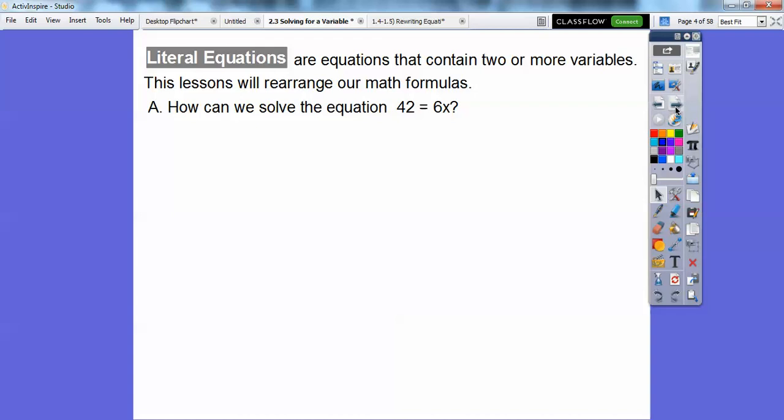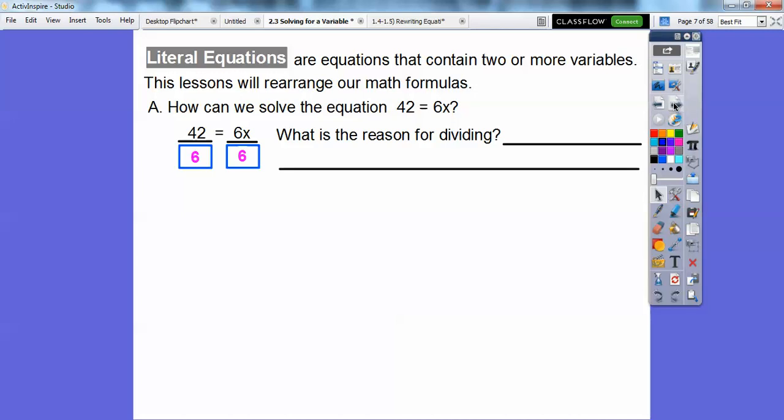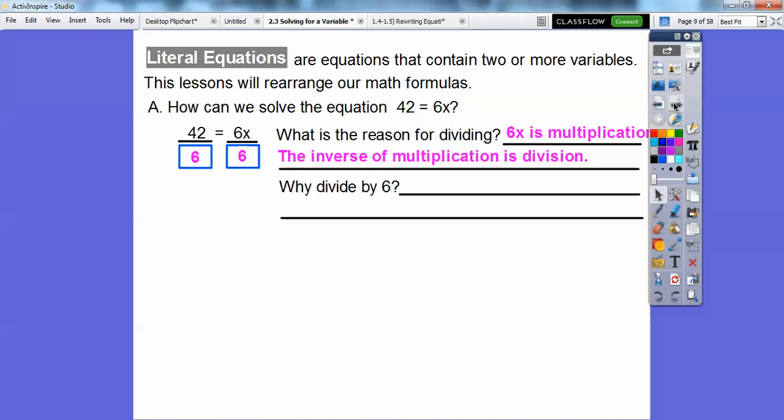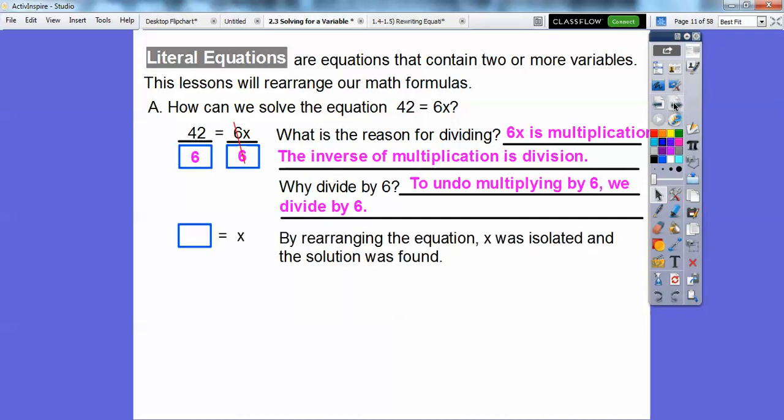So let's go back to a pre-algebra lesson, 42 equals 6x. How can we solve that equation? Well, we're going to divide both sides by 6. We've done this before. 6x means multiplication, so the inverse of multiplication is division. To undo multiplying by 6, we divide by 6. So by rearranging the equation, x was isolated and the solution was found. In this case, it's found to be 7, 42 divided by 6.